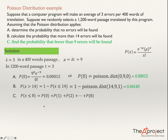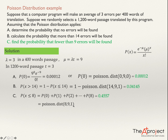I prefer to use Excel. The formula is: =POISSON.DIST(8, 9, 1), where 8 is the value of x (since fewer than 9 means up to and including 8), 9 is the mean, and 1 means cumulative. Press enter and the answer is 0.4557.